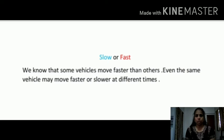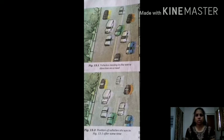If vehicles are moving on a road in the same direction, you can easily say which one of them is faster than the other. Let us look at the motion of vehicles moving on a road. In the figure, you can see the first figure shows the position of some vehicles moving in the same direction at some instant of time, while the second figure shows the position of the same vehicles after some time. By seeing this figure, you can easily decide which vehicle is moving the fastest and which one is moving the slowest.